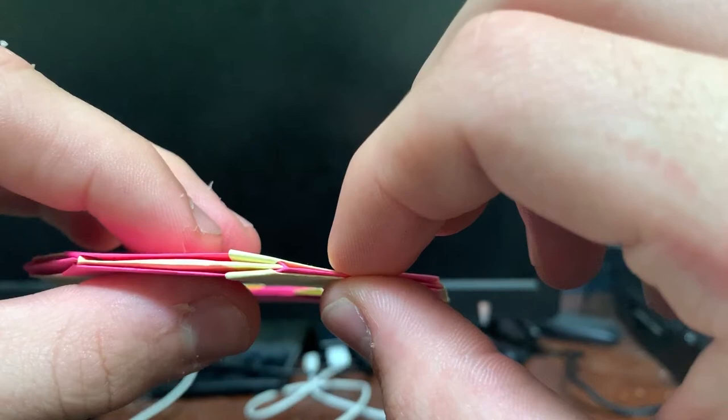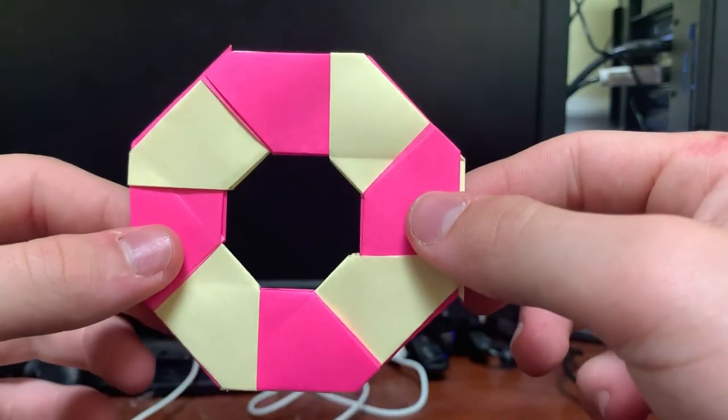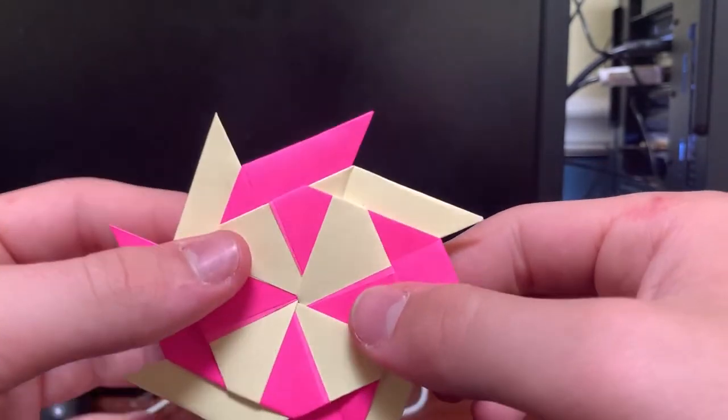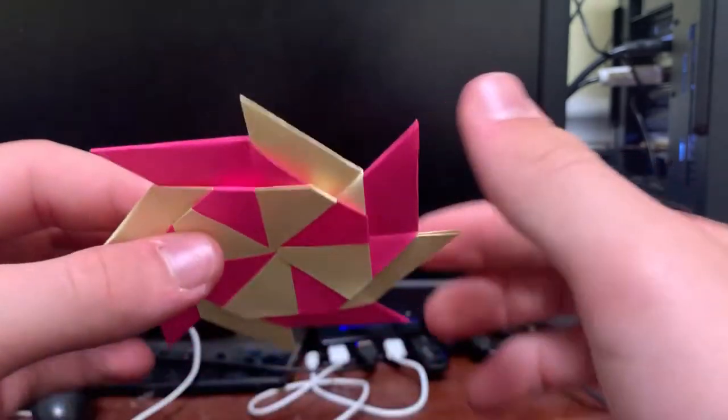That's done. To transform it, you just push in from opposite sides and eventually it will just slide together. To untransform it, you just pull out on opposite sides, and that's it.